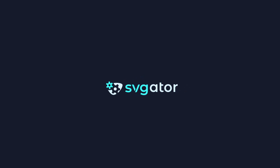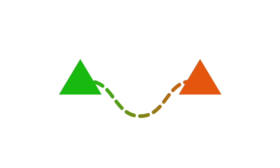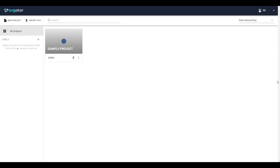Hi, it's Kit with SVJader. In this tutorial I will show you how to create a marching ants animation of a stroke path using its offset and dashes properties. So let's jump right in.